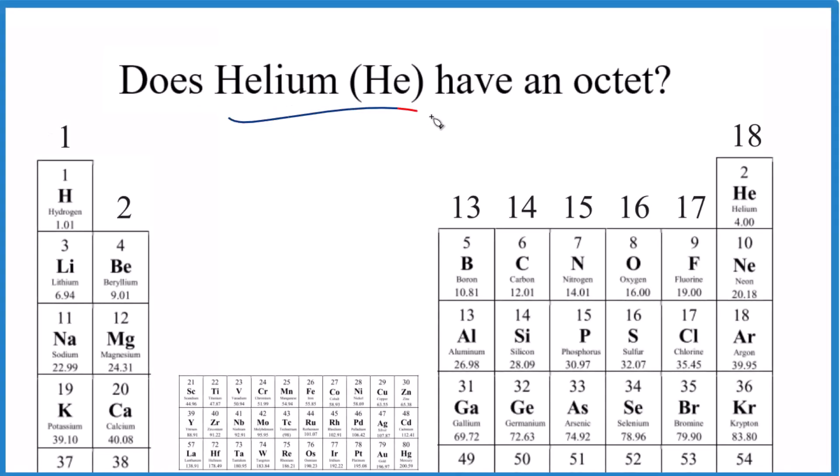I was asked whether helium has an octet, because it's in group 18 with the noble gases. If you know the trend for valence electrons, the number of electrons in that highest energy level, group 1 has 1, group 2 has 2.